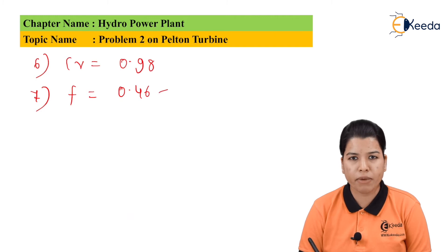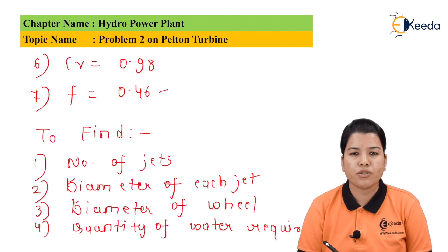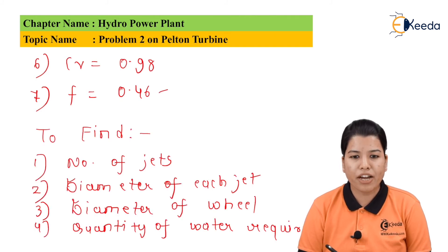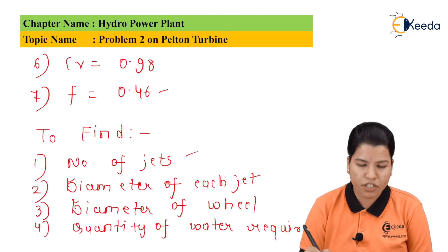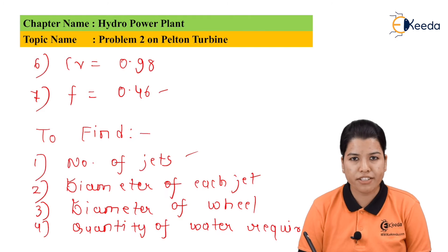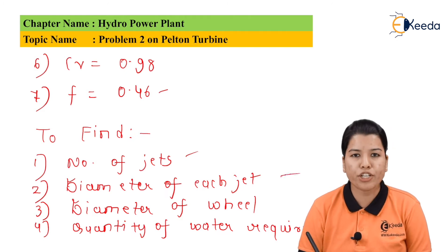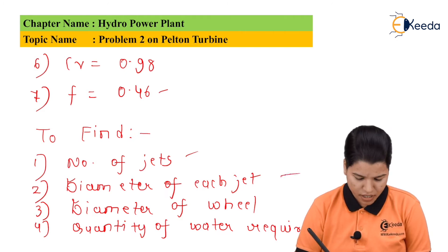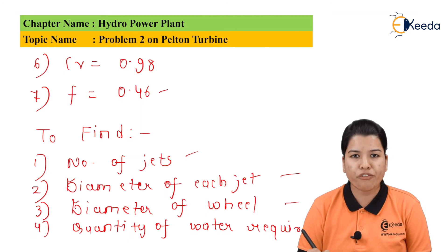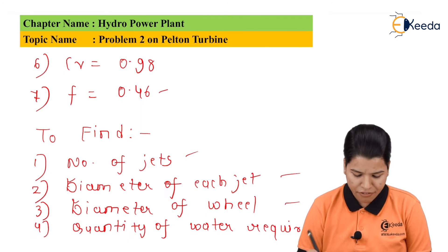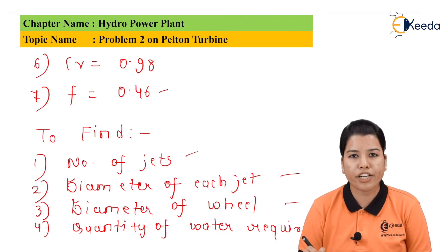Let us see what we have to determine in this problem. We have to find: the total number of jets required, the diameter of each jet required, the diameter of the wheel, and finally the quantity of water required.